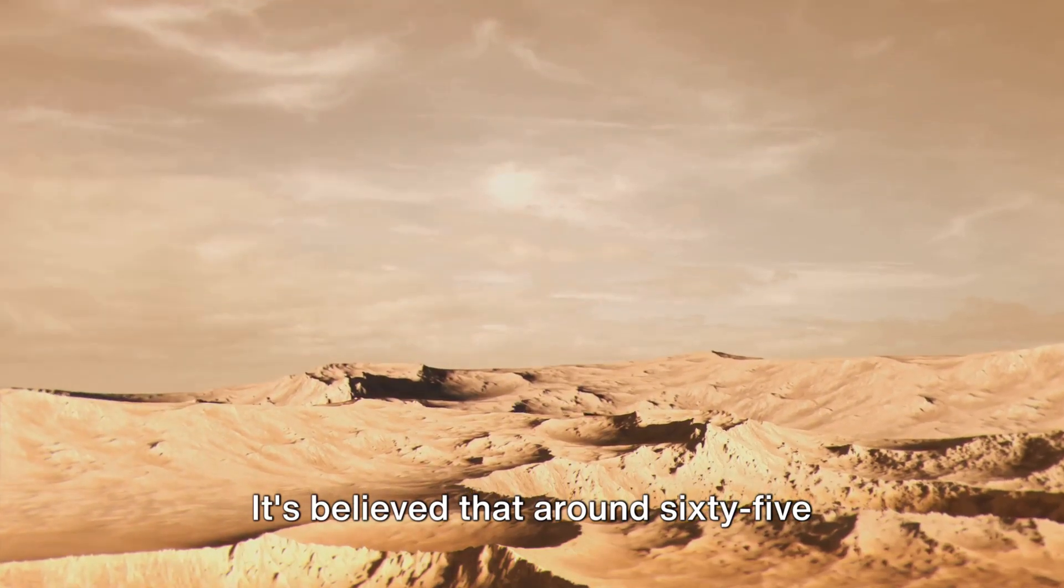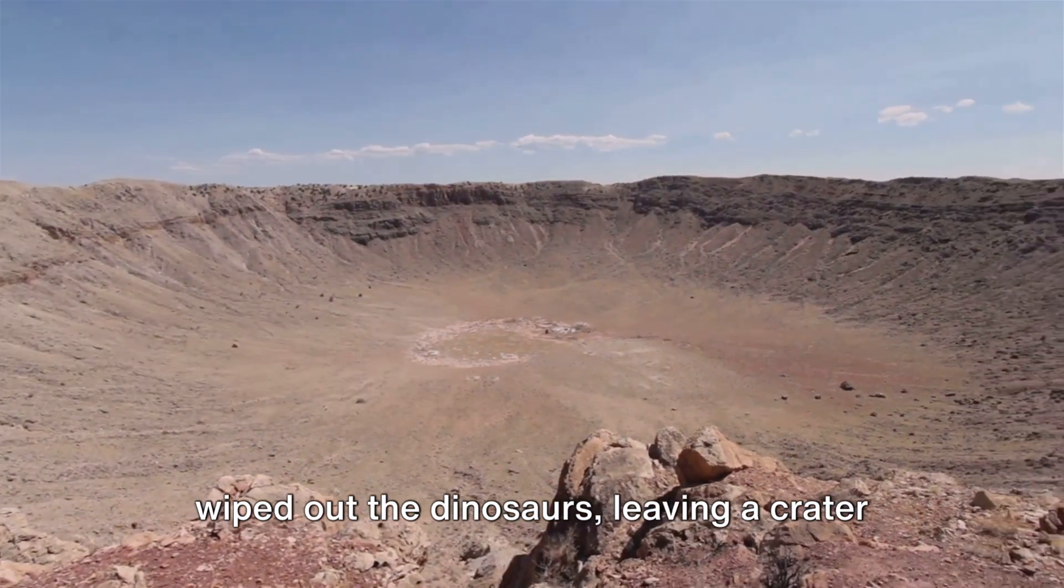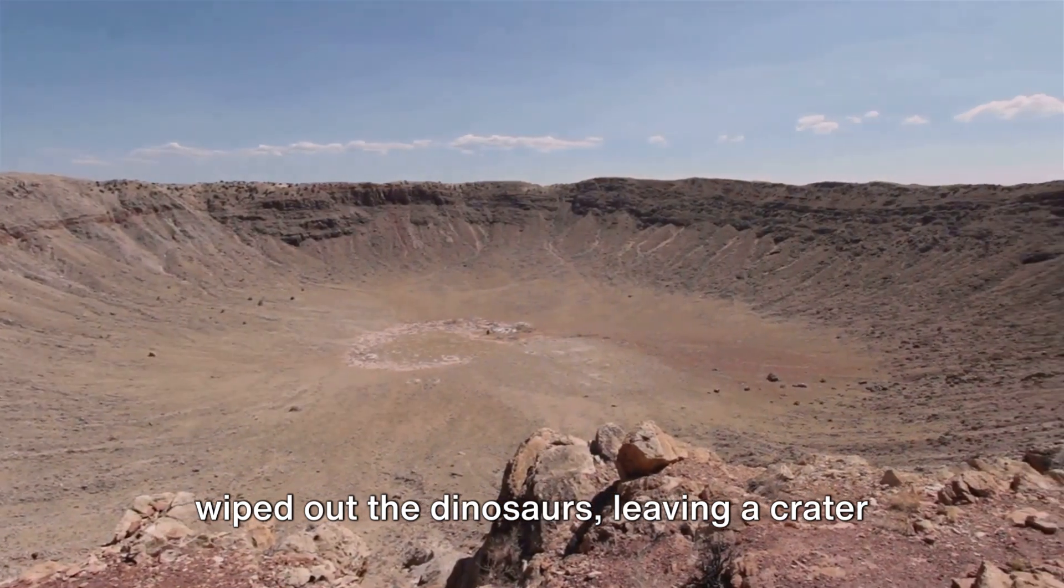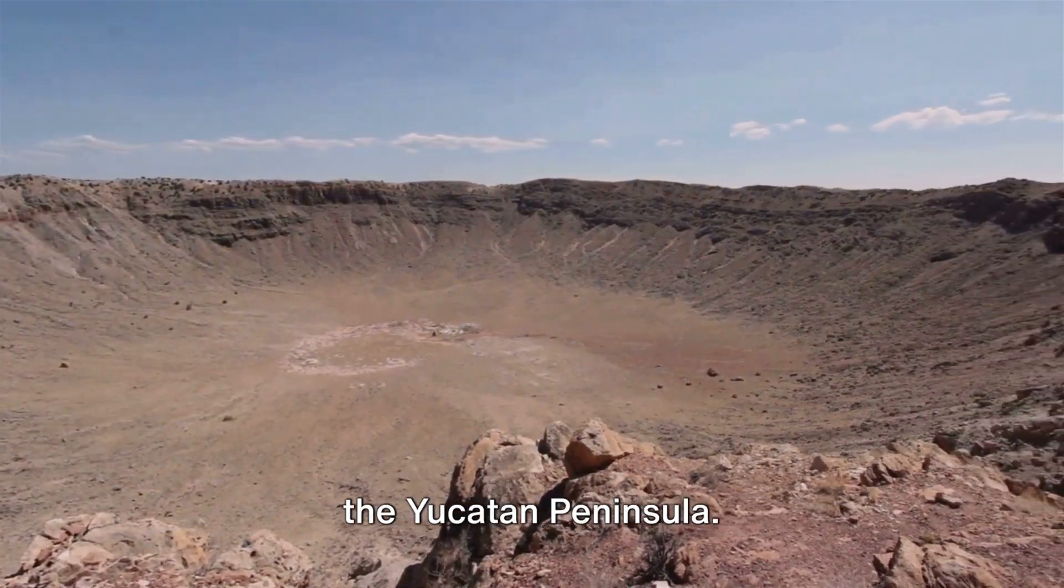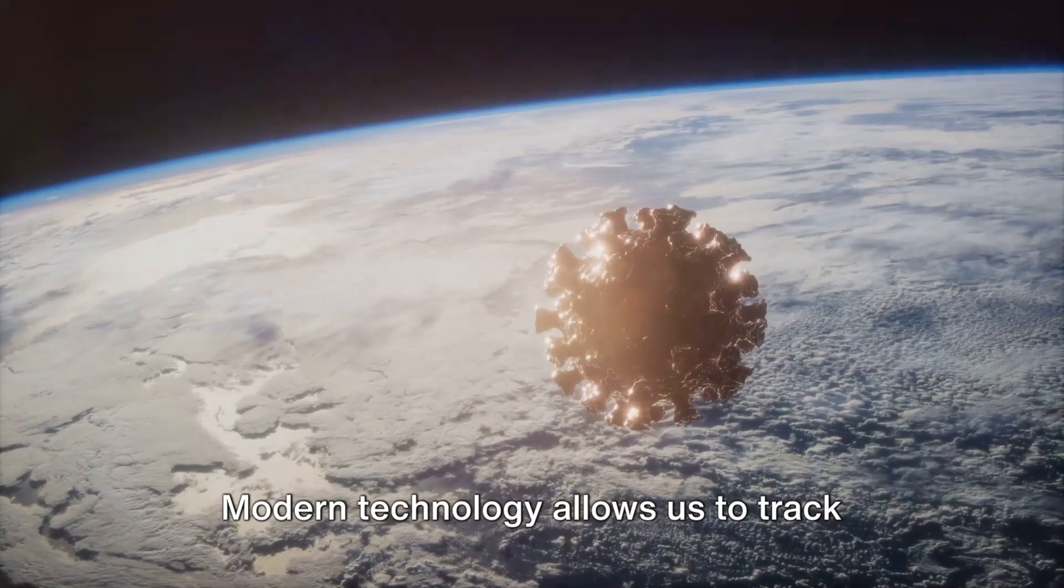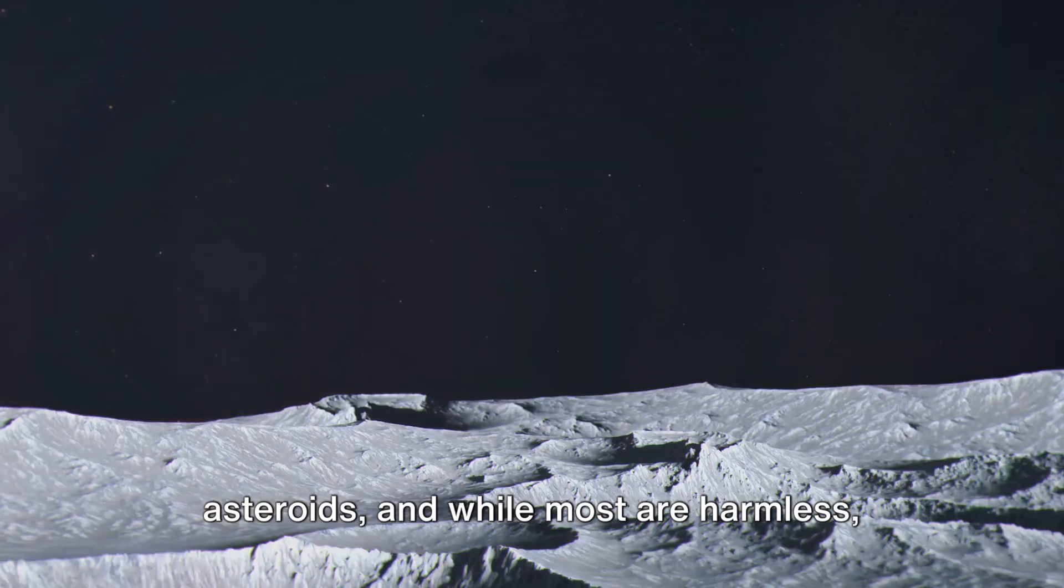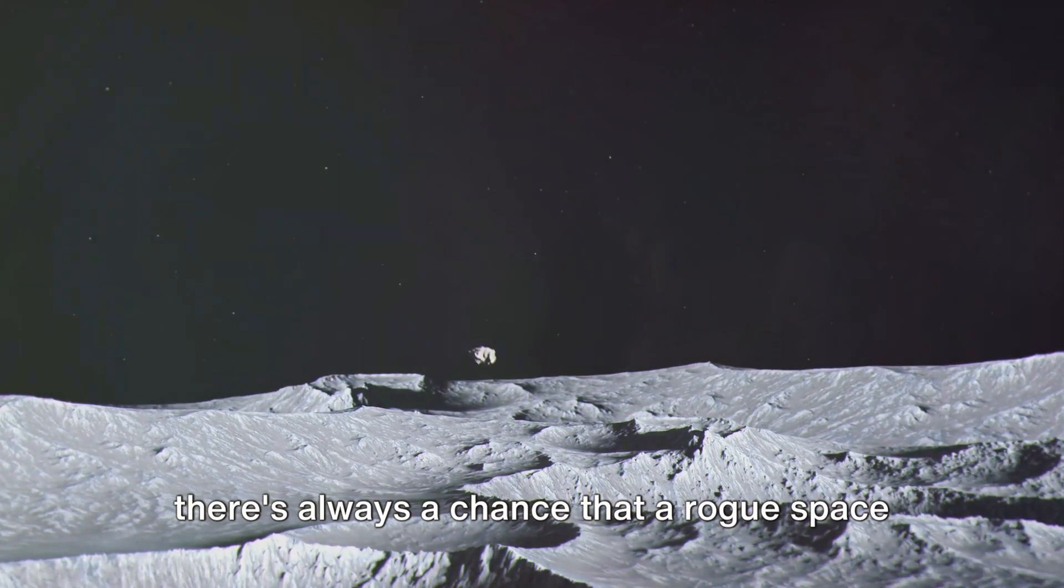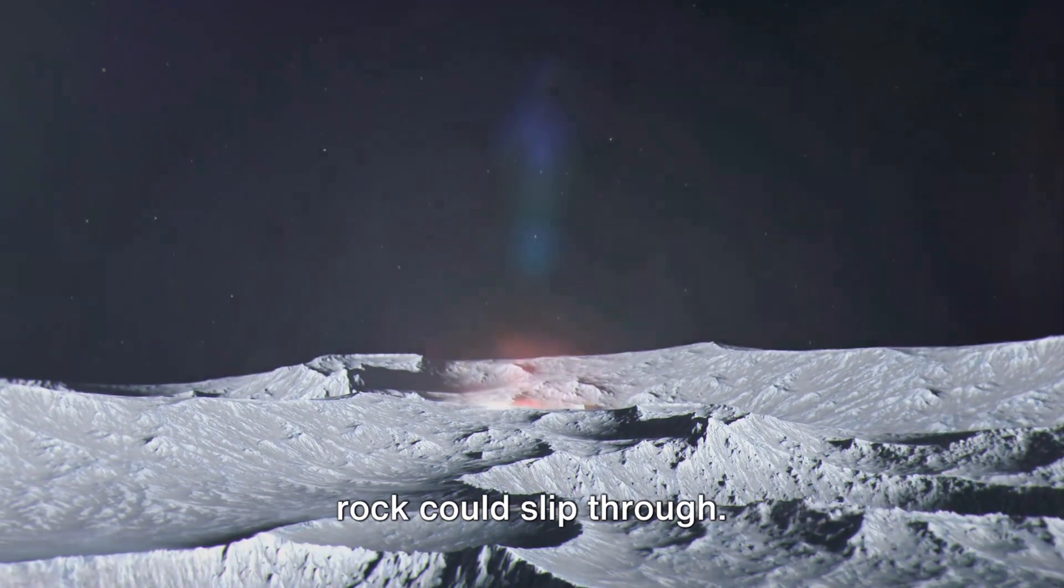It's believed that around 65 million years ago, an asteroid collision wiped out the dinosaurs, leaving a crater over 100 miles wide in what's now the Yucatan Peninsula. That's the power we're talking about. Modern technology allows us to track asteroids, and while most are harmless, there's always a chance that a rogue space rock could slip through.